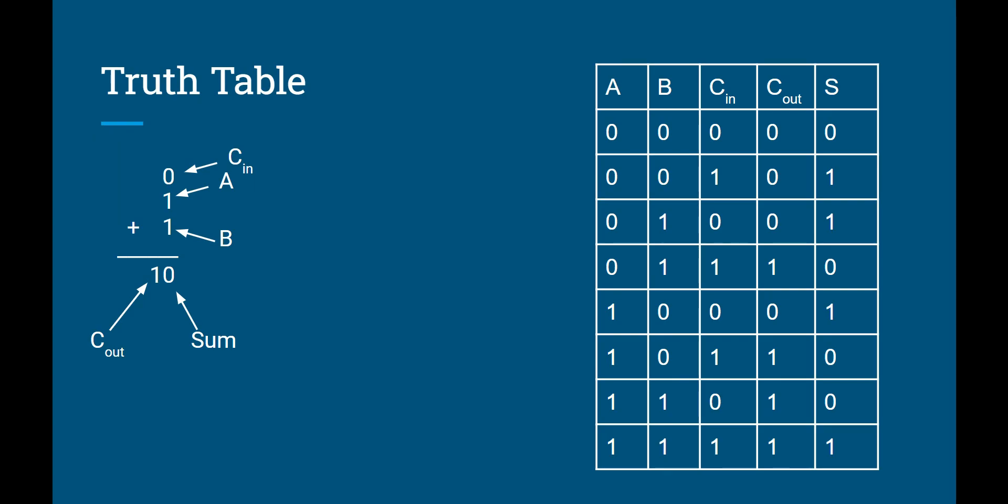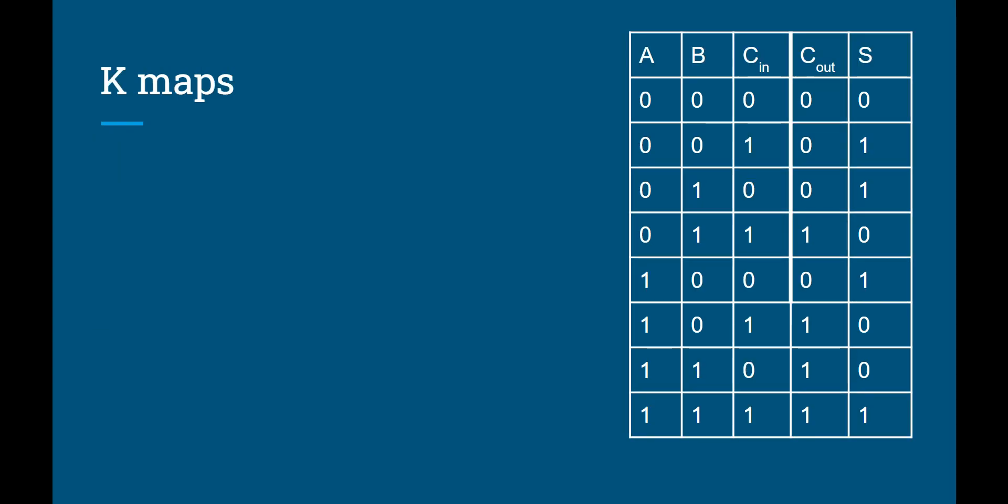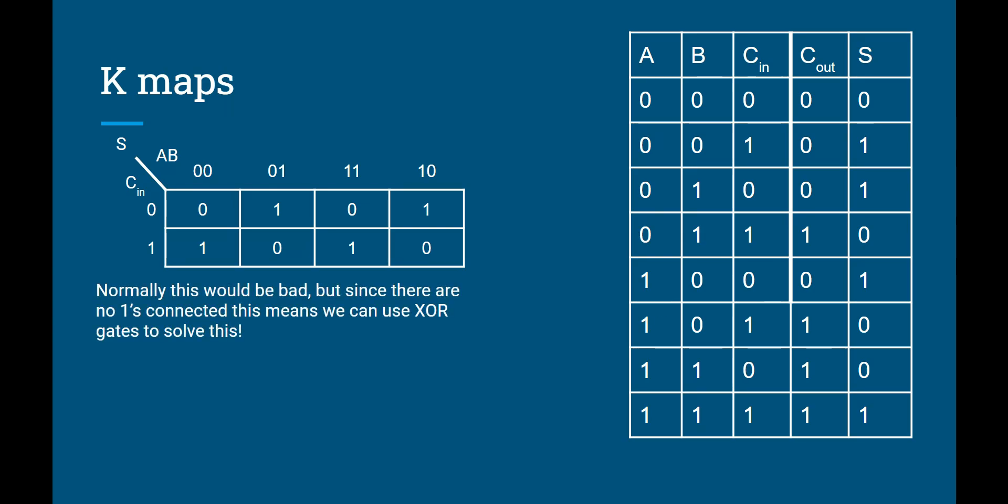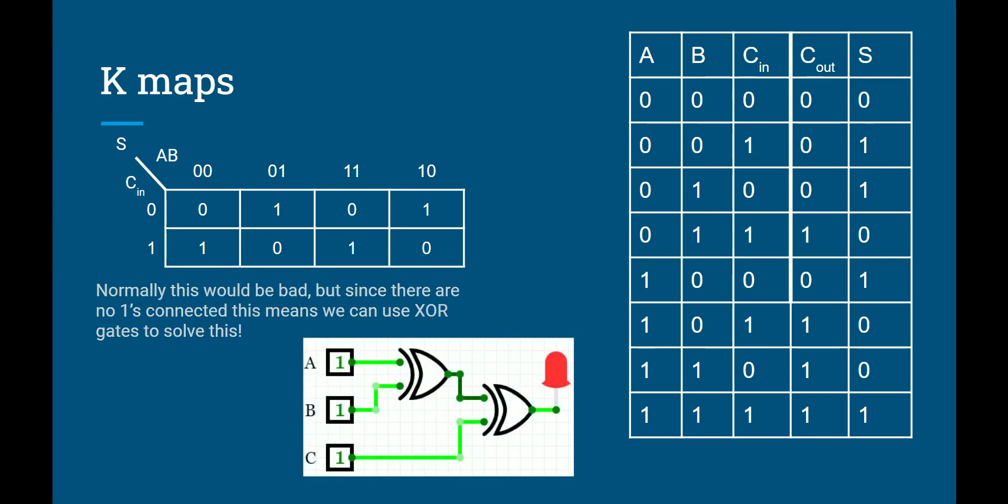So now, how do we take that truth table and put it into two separate K-maps? So our first K-map is going to be for the sum. And when you first look at this, you might think to yourself, oh no, I can't combine any of these 1s. I'm going to have four different pieces of this equation. And this is going to be a real bummer. And normally, that is true. But since there is absolutely nothing that we can circle, there are no 1s that we can combine, that means that we actually get to use XOR gates.